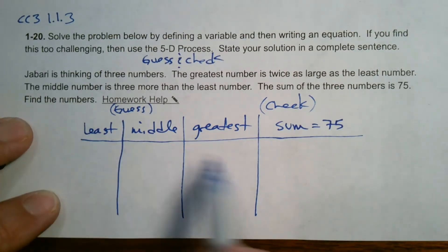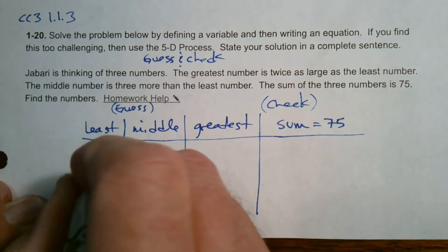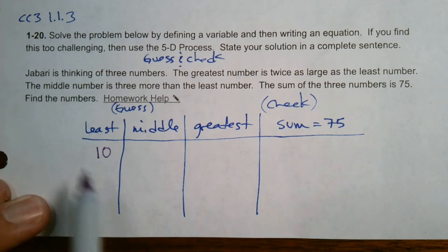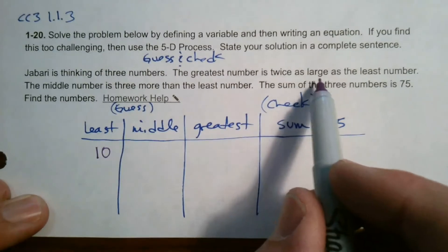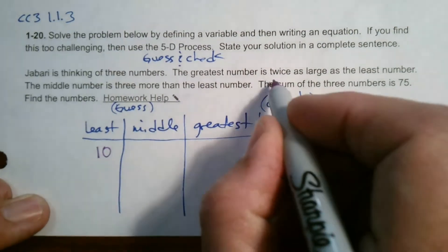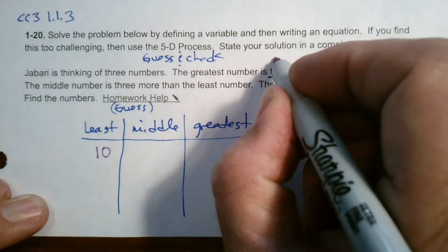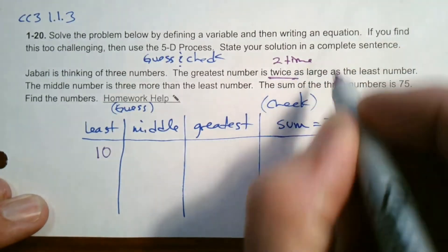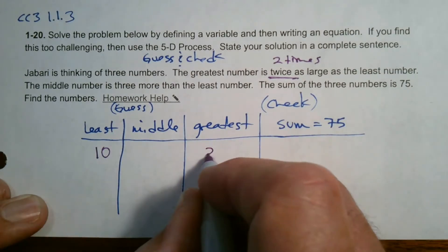Let's start the guessing process. I usually start with 10 as a guess. The greatest number is twice as large as the least. So if I guess 10 for the least, twice means two times, so the greatest is 20.